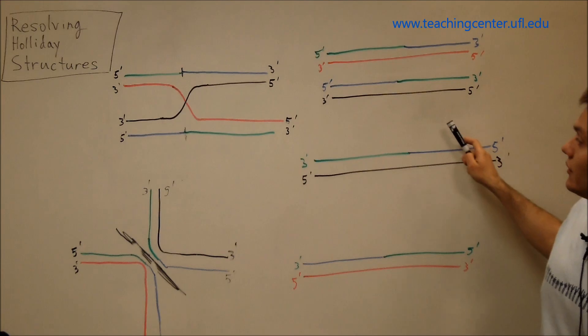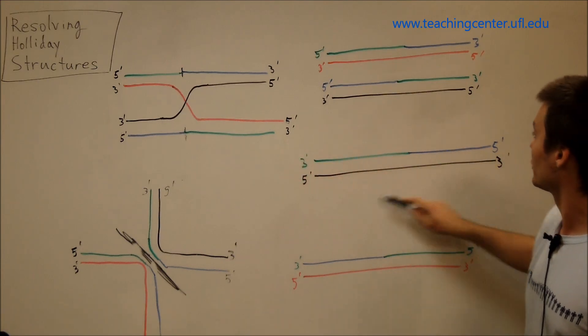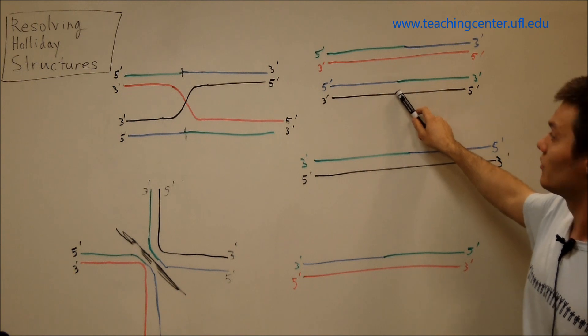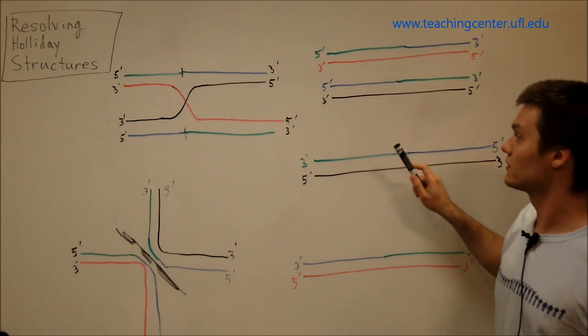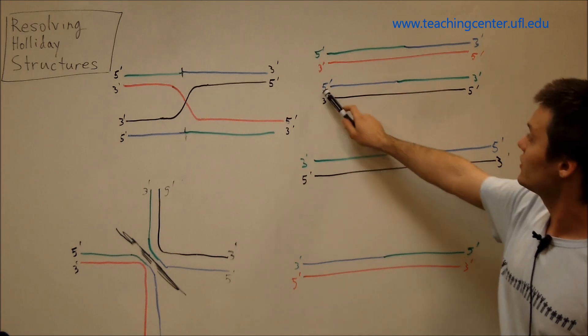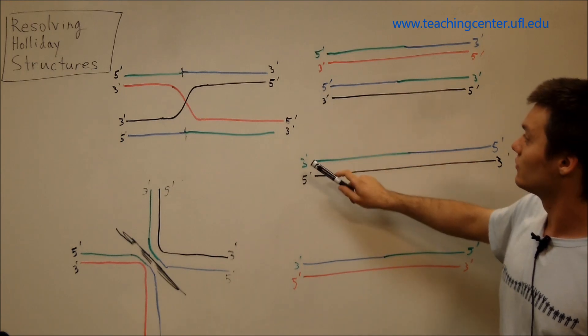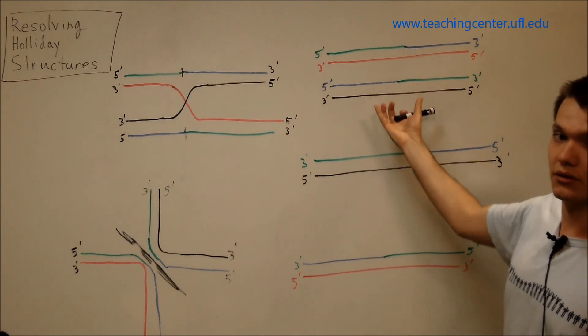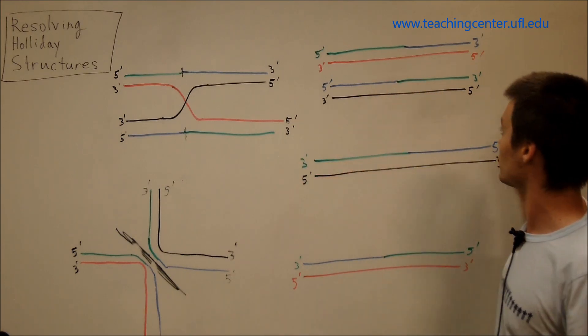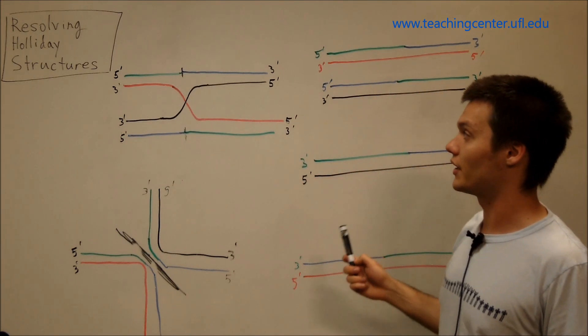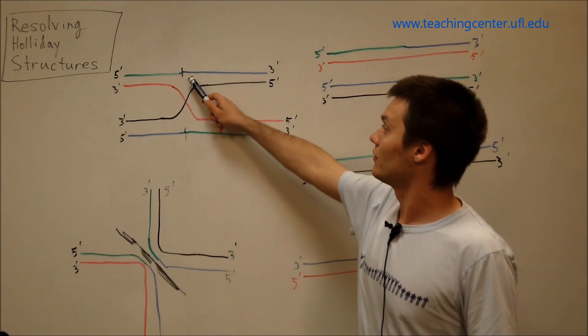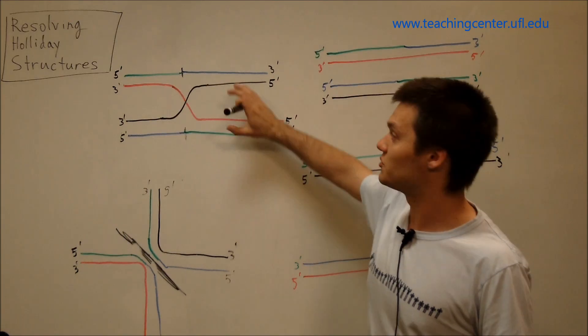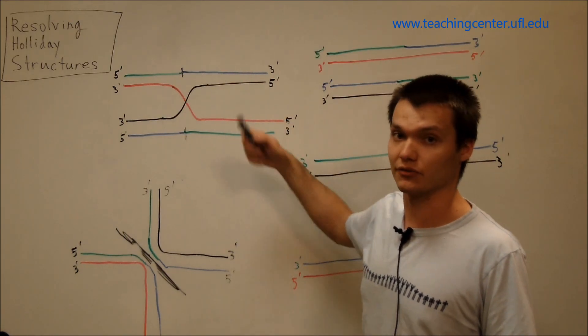And so, we see here that this structure here is exactly the same as this, only backwards. So, this starts with a five prime end, while this starts with a three prime end. So, if we just flip this around, we would have exactly this structure. And essentially, that's why we can flip these two strands, or these parts of these strands, when we make a vertical cut.